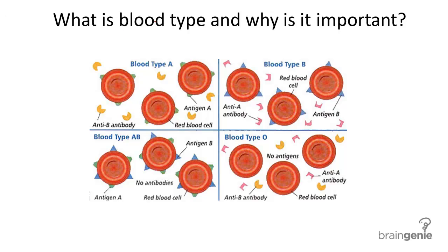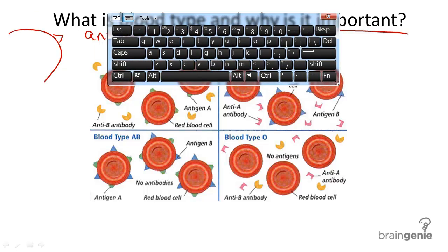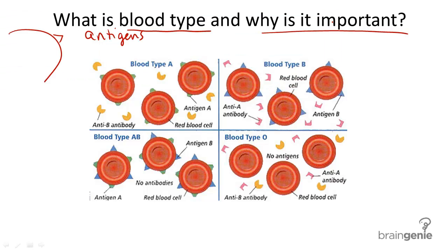Blood type. What is blood type and why is it important? Blood type refers to the presence or absence of specific antigens or proteins on the surface of your red blood cells. The blood types include A, B, AB, and O.